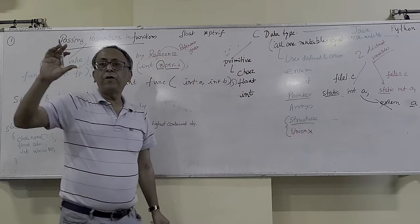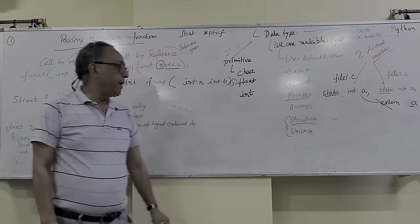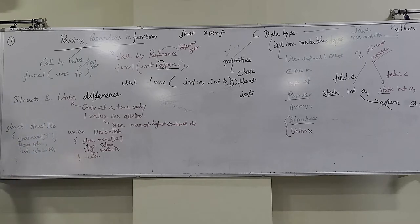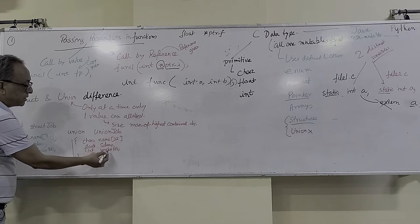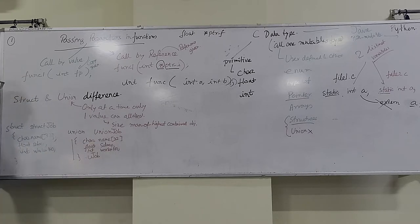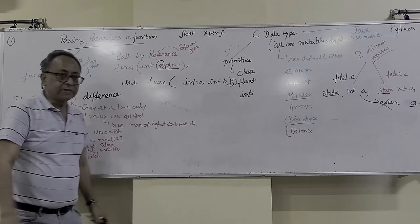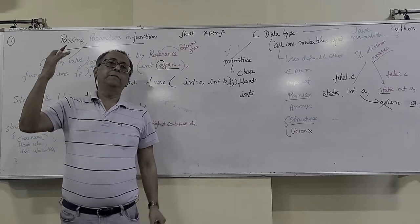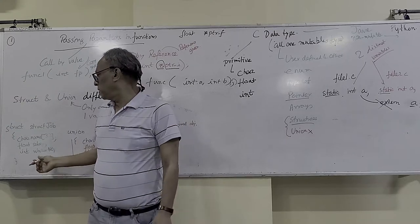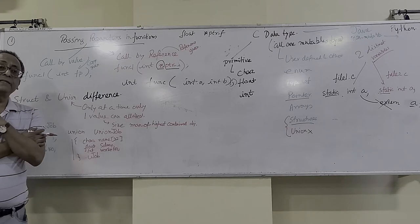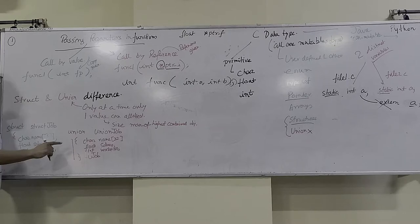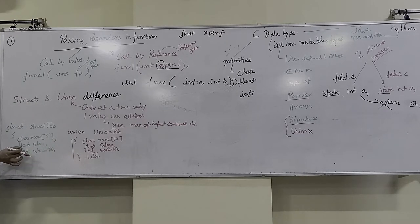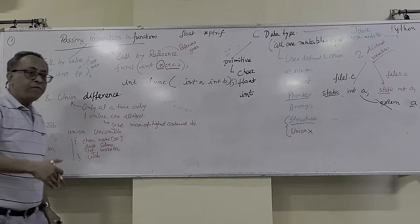Structure is simple: you can have a first name, second name, roll number, ID number — all together. A union can hold only the data for the highest-size member at any one time. For example, if a union has a character array of 32 bytes, a 4-byte roll number, and a 4-byte integer worker number, it will only use 32 bytes — the maximum. Structure takes all members together, so it is 40 bytes total. Union uses only the highest size — and if you put one value, the other value will not be there. You access both using the dot operator.